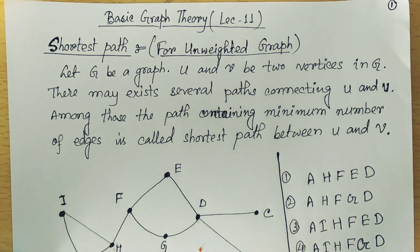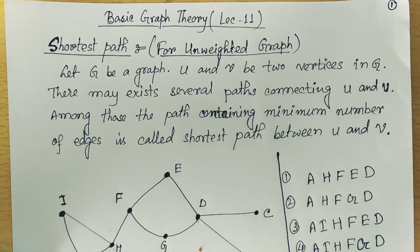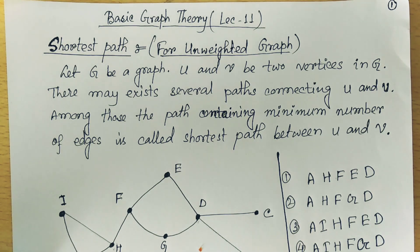Shortest path means: if G is a graph and U and V are two vertices in it, then there may exist several paths connecting U and V.